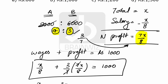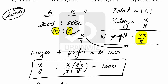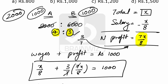So the total profit is rupees 2000, in which B received rupees 1000 and the rest of the 1000 is taken by A. So option B is the correct answer.